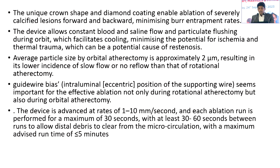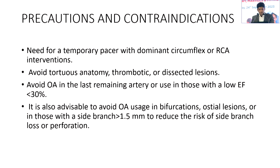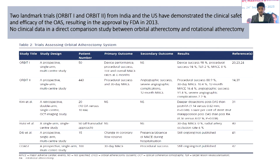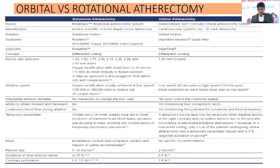The orbital atherectomy device allows constant blood and saline flow with particulate flushing during the procedure, which facilitates cooling — something not available with rotational atherectomy — resulting in fewer thermal injuries. The average particle size is less than 2 microns, so no-reflow or slow-flow events are less common. The ORBIT I and ORBIT II trials from India and the US demonstrated clinical safety of the orbital atherectomy system, leading to FDA approval.